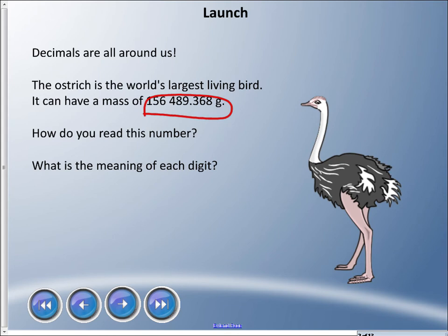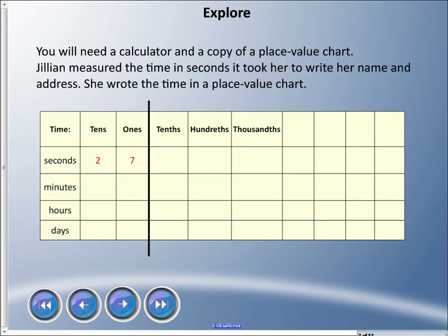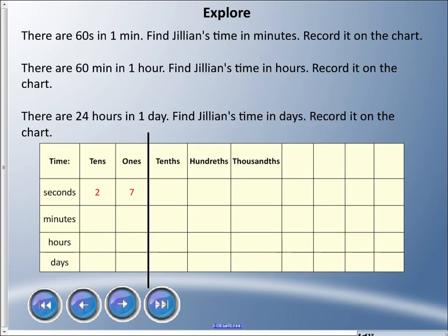You can try this activity if you want — you'll need a calculator and a copy of the place value chart, or you could just draw one. Jillian measured the time in seconds it took her to write her name and address. She wrote this time in a place value chart — it took her 27 seconds to write her full name and address.